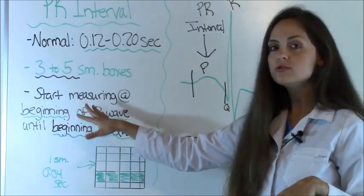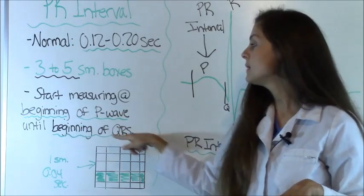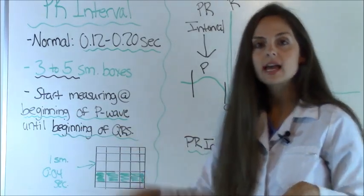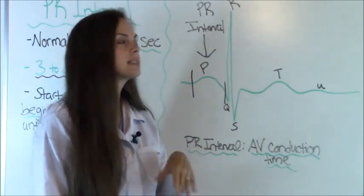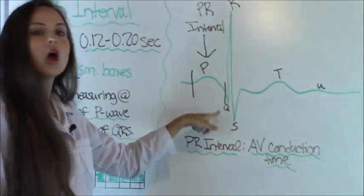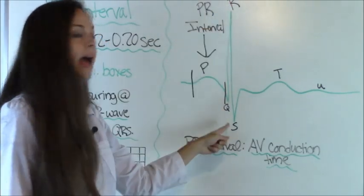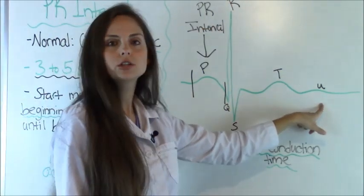And how you start measuring is you start measuring at the beginning of your P wave until the beginning of the QRS complex. And right here behind me, I have a sample PQRS complex. It's blown up so you can see it better. You have your P wave, your QRS complex, then you have your T wave, and sometimes U wave is present.